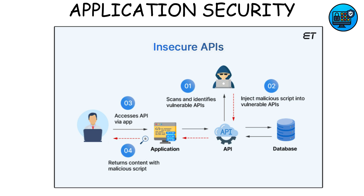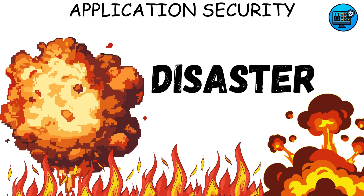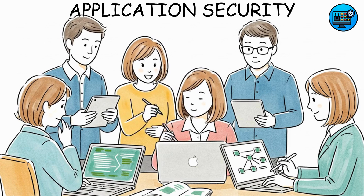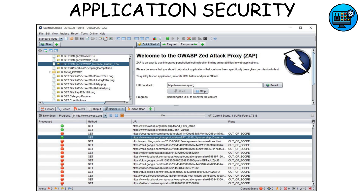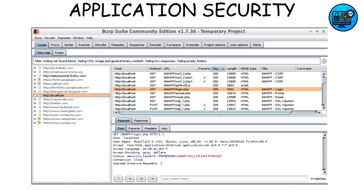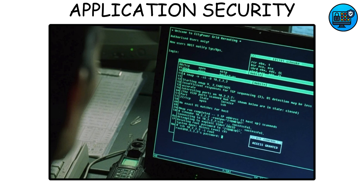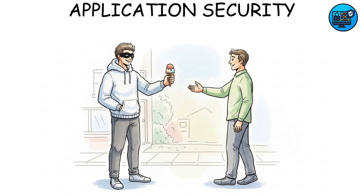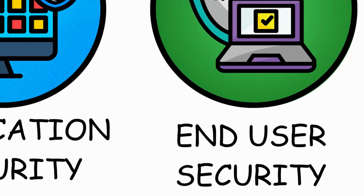Even a single insecure API can lead to total disaster. That's why cybersecurity teams use tools like OWASP ZAP, BurpSuite, and dynamic scanners to break their own apps before attackers do.